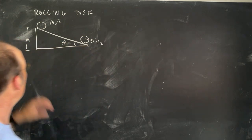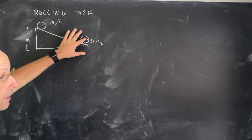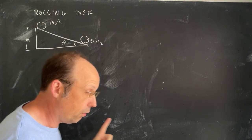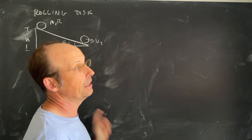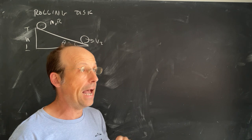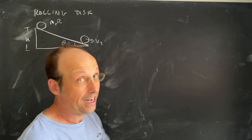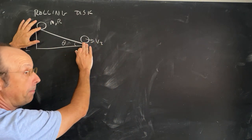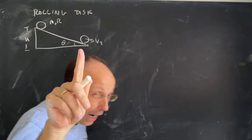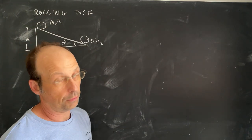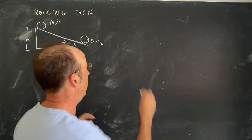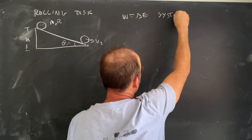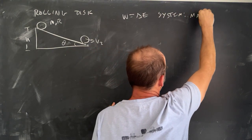To find the speed of this disc rolling down the incline with height h and angle theta, I'm going to do a simpler problem first. Imagine it's not a disc, but a frictionless block that's sliding and not rolling. Since I'm dealing with a change in position, I should use the work-energy principle — not a change in time. Work is a change in energy, and the system is the mass plus the earth.